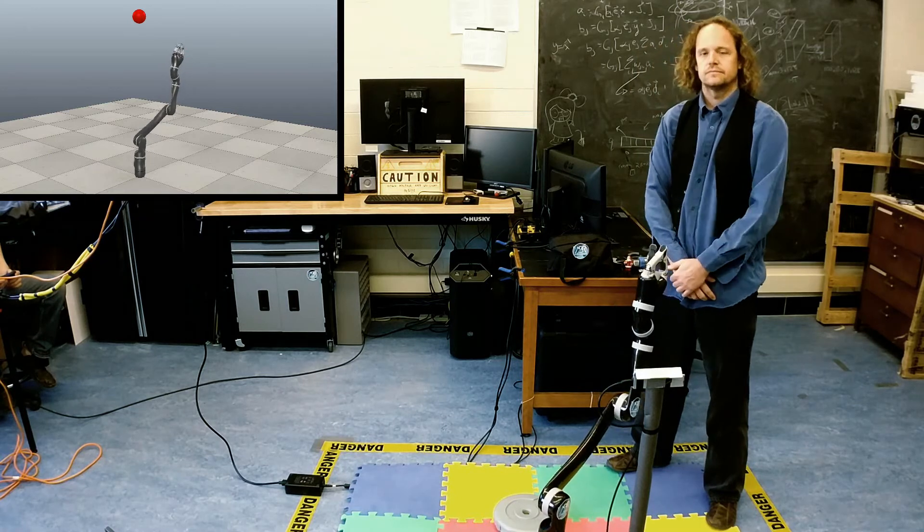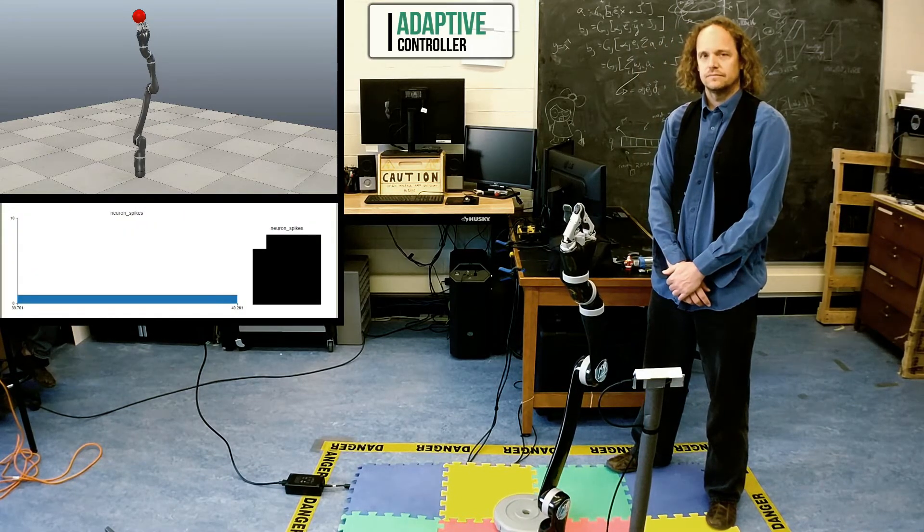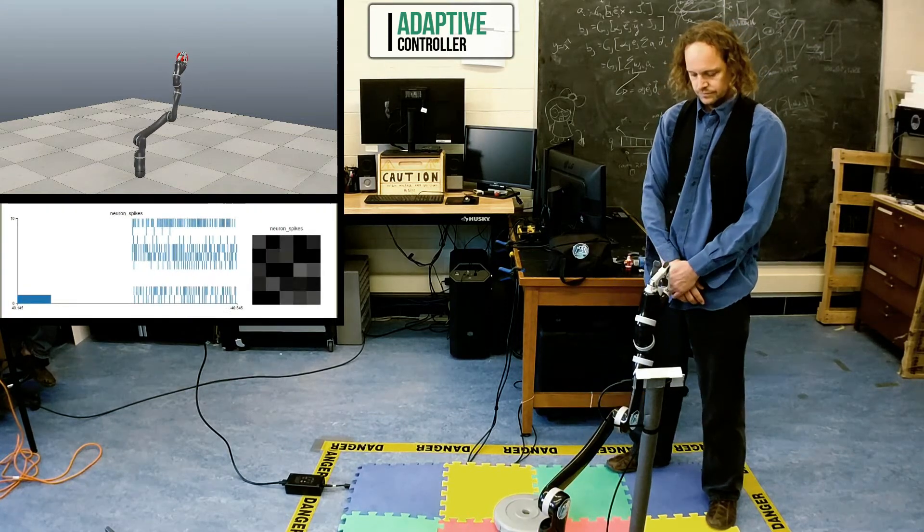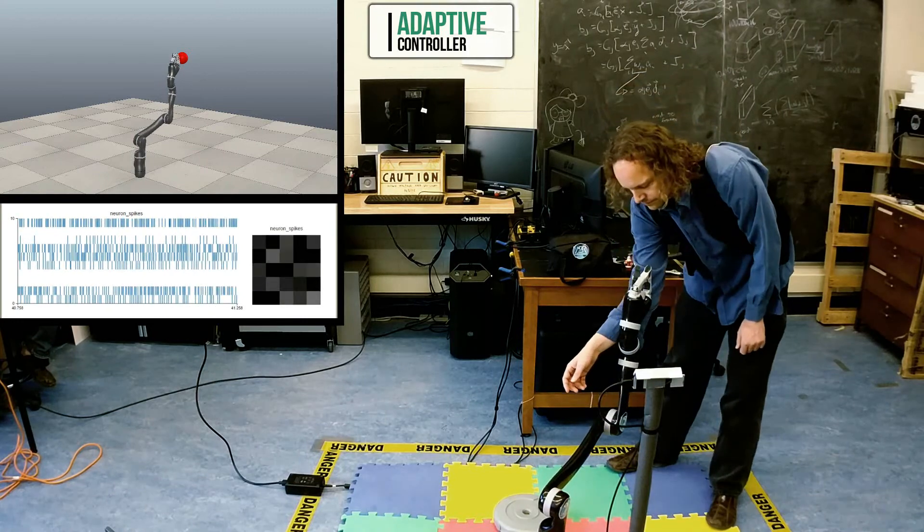The same kind of compliance is available in our adaptive controller. As with the compliant controller, it's using force control, allowing safe interaction with people. In fact, when we start the controller, it has exactly the same model as the non-adaptive version.